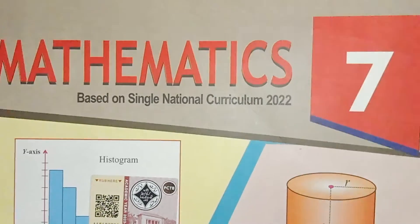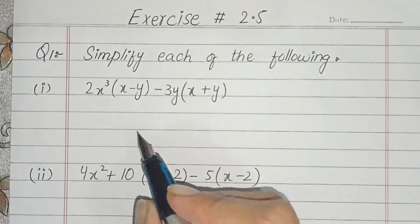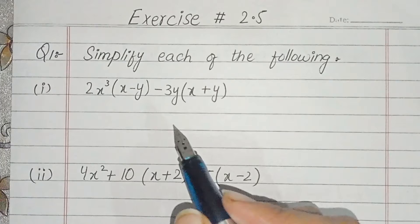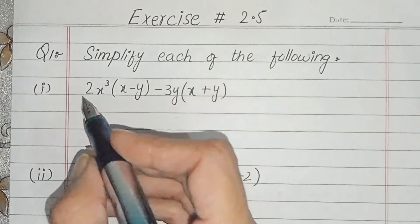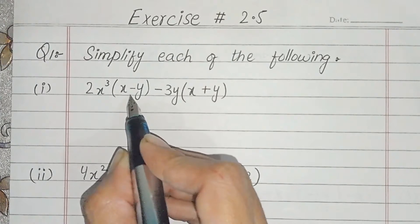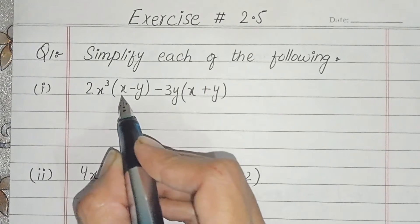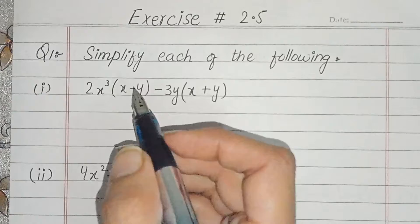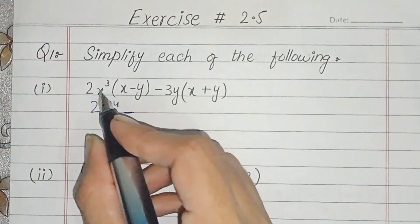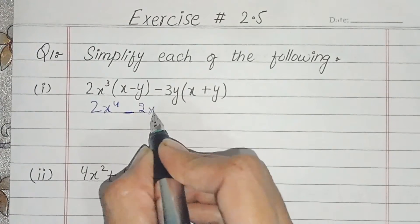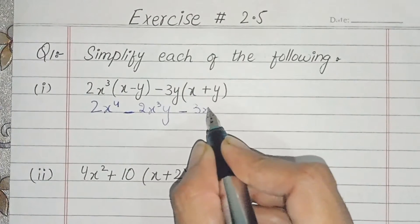Question number one: simplify each of the following. We have to multiply them. In the last exercise we had to multiply the like terms. We multiply by 2x³ — when we multiply, the variable stays the same and the powers are added. We then multiply by 2x⁴ with a minus sign, and here we get 2x³y. We multiply by minus 3xy.